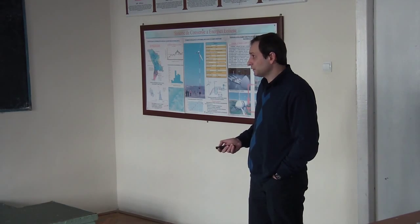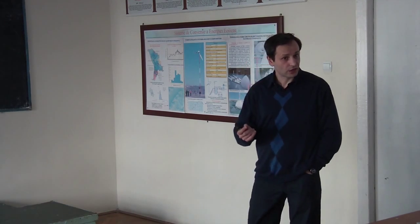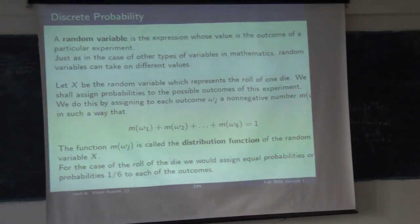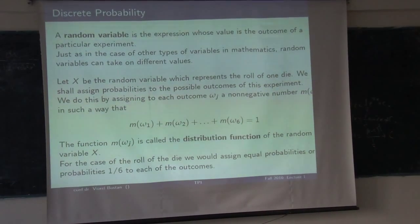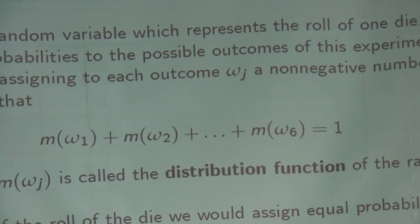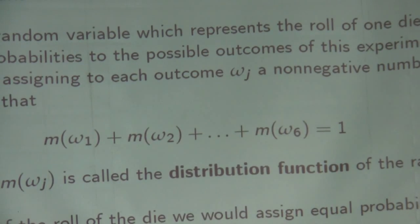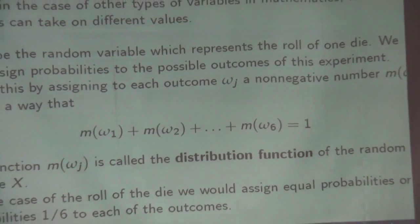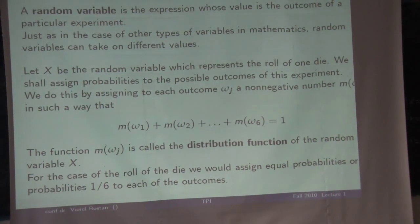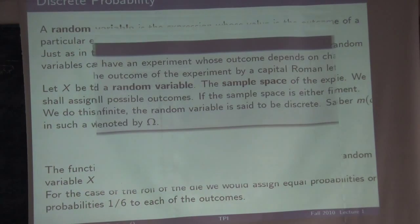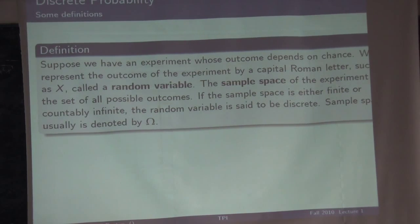For example, if you are rolling a die, you have six outcomes: omega-1, omega-2, omega-3, and so on up to omega-6, which are numbers 1, 2, 3, 4, 5, 6. To each number you are assigning a distribution function value. Since all faces are the same, the sum of all six should be 1. Since they are all the same, you have 6 times something equals 1, so that something equals 1/6.